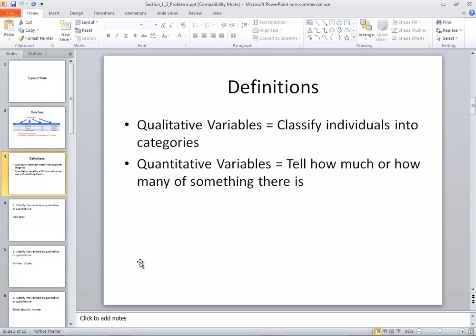Now we've got two different ways we can classify data. Qualitative variables, this is where we classify individuals into categories. Some things aren't so easy to put into a numerical format. For example, a hair color. How do you put a number on that? Maybe you have blonde, red, redhead, or black hair. So you can break them into that.